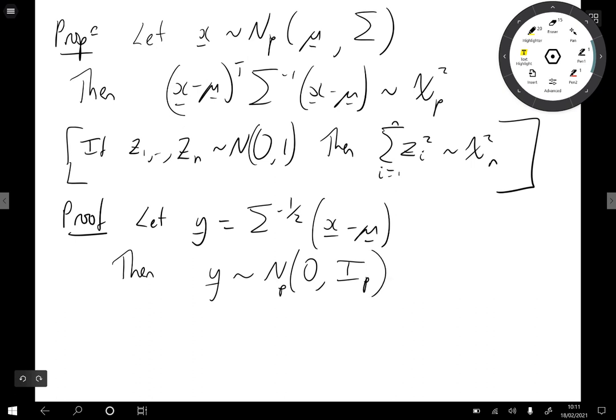Multivariate normal mean 0 identity matrix for its covariance by the corollary we saw earlier. Now (x - μ) transpose Σ inverse (x - μ). Well this is just y transpose y. By the way we defined y here.